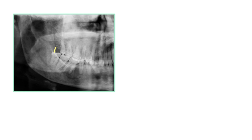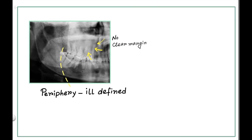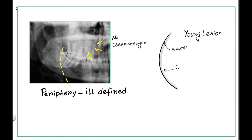Now let's discuss about the periphery. The periphery of the lesion is most commonly ill-defined and blends imperceptibly with normal bone. Other radiopaque lesions have a demarcated border, so this point is worth remembering. The periphery of young lesions sometimes appears to be sharp and even corticated.